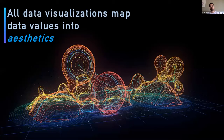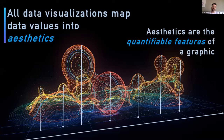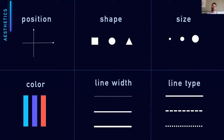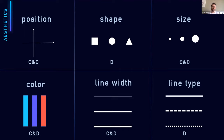Whenever we visualize data, we map values onto aesthetics. In the context of data visualization, aesthetics are the quantifiable features of a graphic. In static figures, the aesthetics we use are: position, shape, size, color, line width, or line type. Some are compatible with both continuous and discrete data, such as position, but it's limited — we cannot go beyond three dimensions. Shape applies only to discrete data, but you shouldn't use too many, otherwise it gets visually crowded.